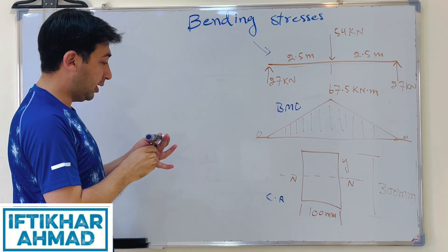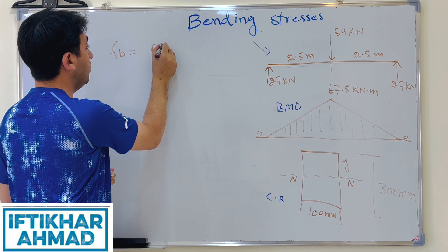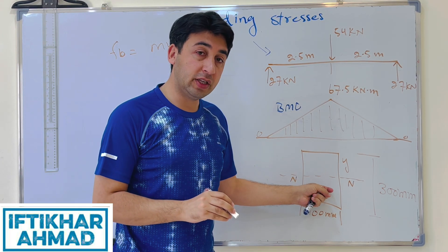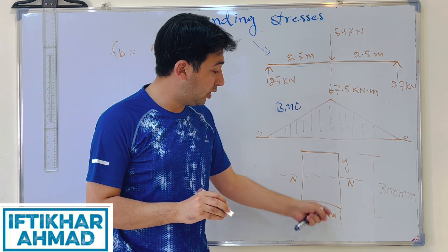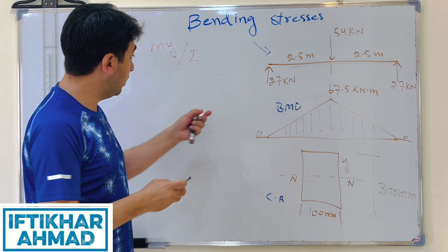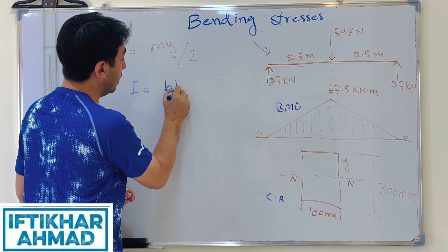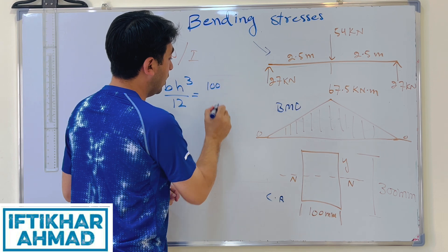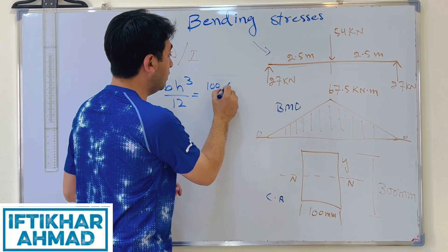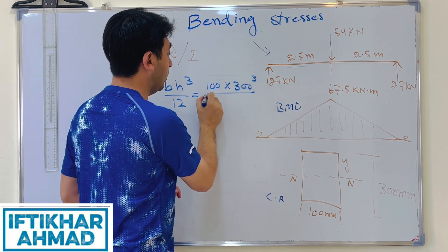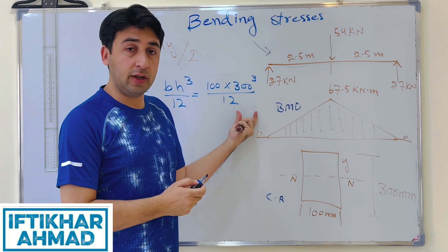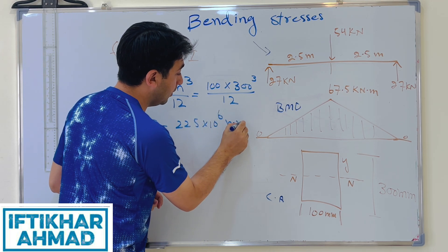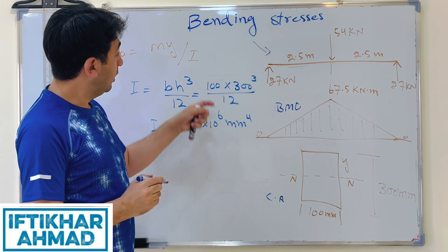Using the formula fb = MY / I, we first find the moment of inertia. For a rectangle, I = BH³ / 12. With B = 100 mm and H = 300 mm: I = 100 × 300³ / 12 = 225 × 10⁶ mm⁴. Wait — calculating: 100 × 27,000,000 / 12 gives I = 5 × 10⁸ / 12... the result is 225 × 10⁶ mm⁴.